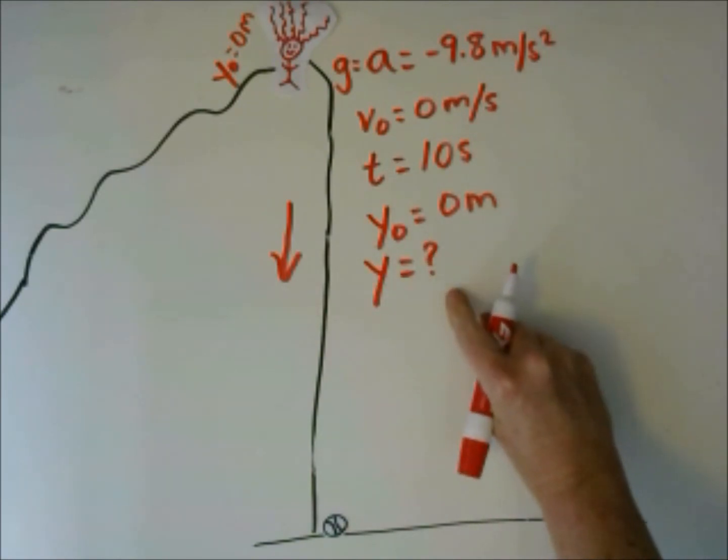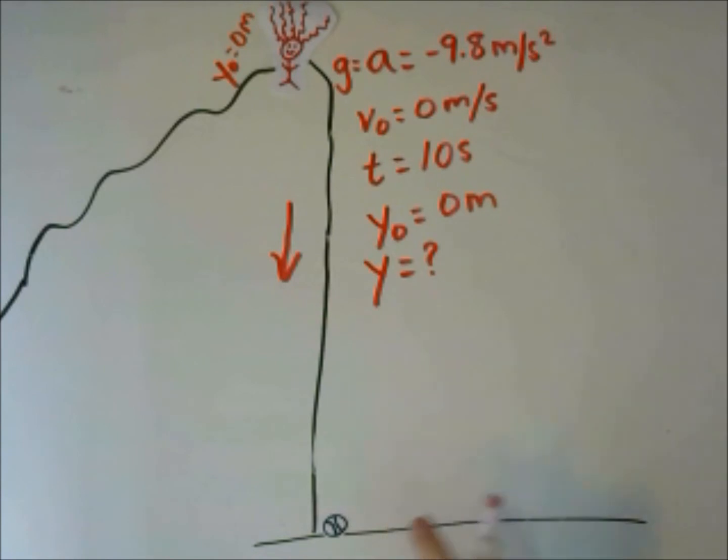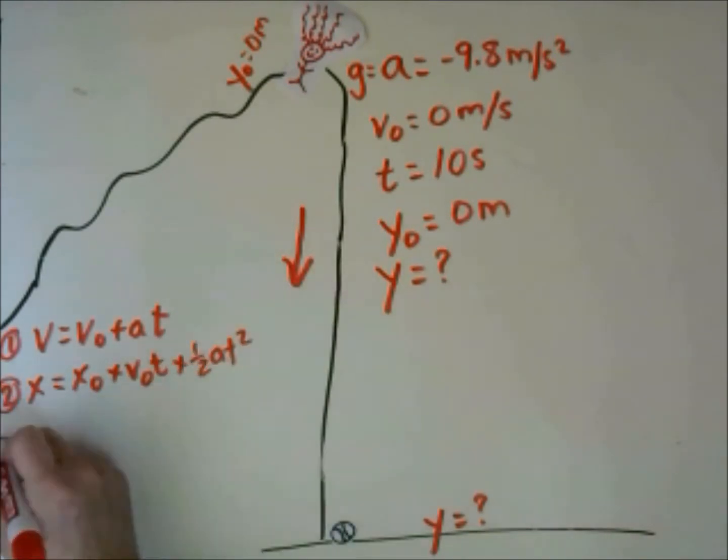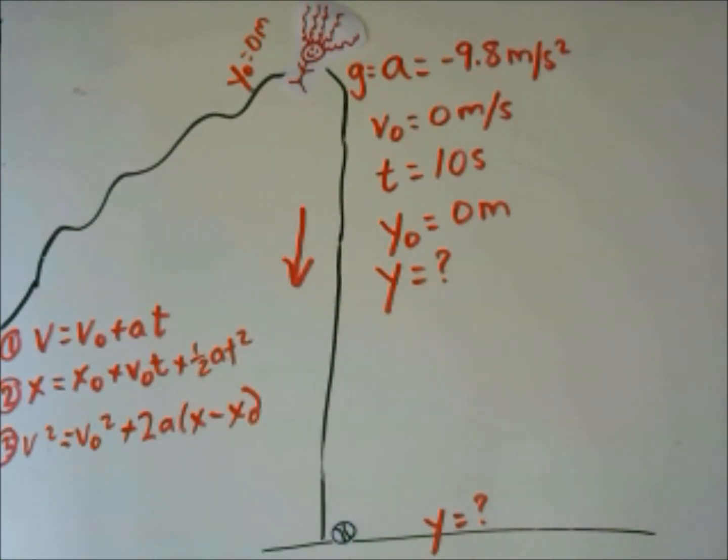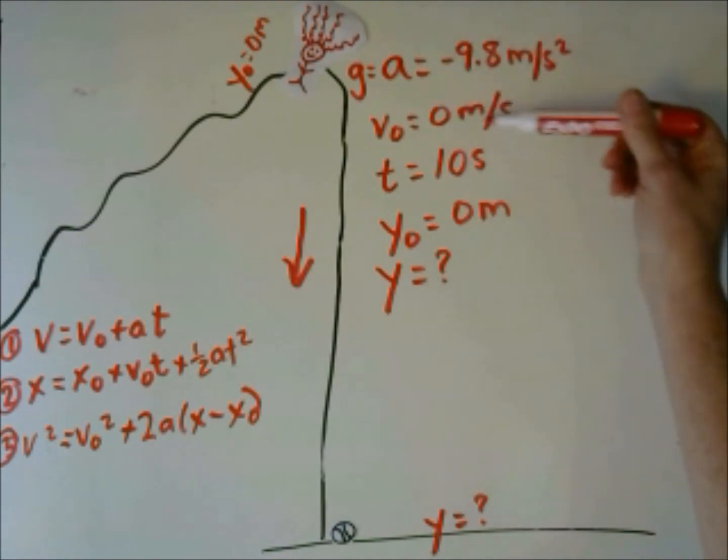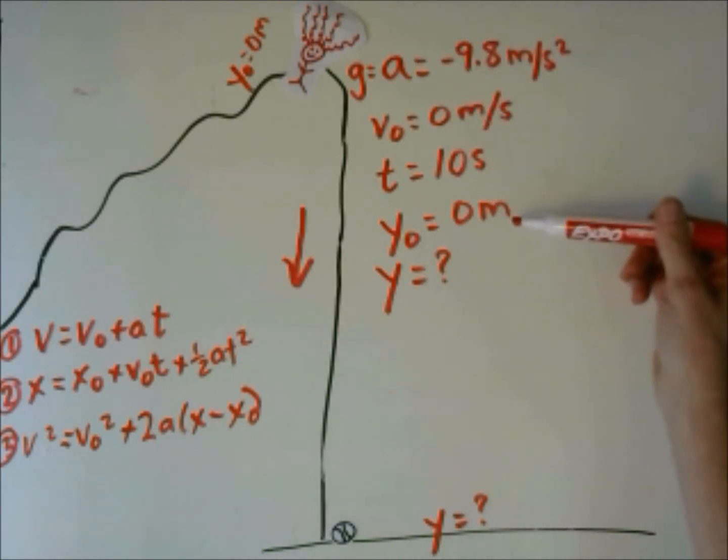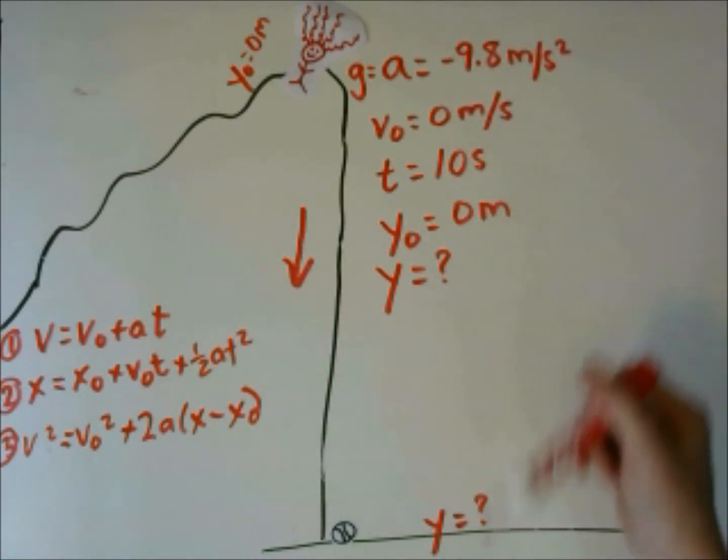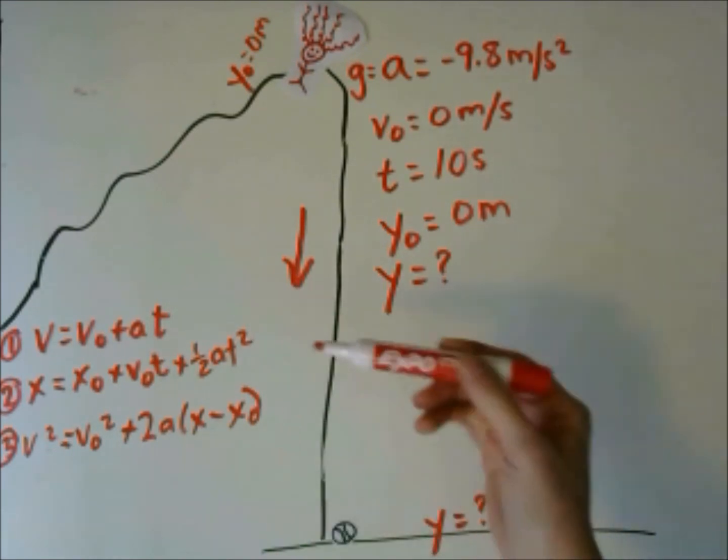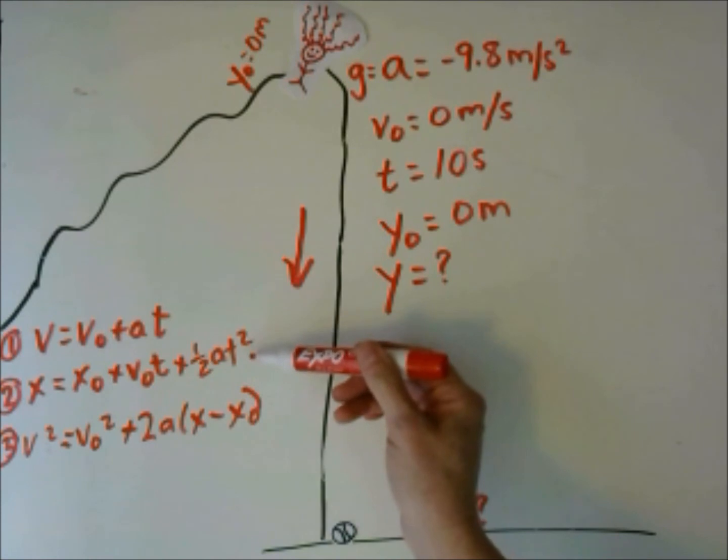And we want to find the y position down here. That will tell us how tall the cliff is. We will remember our kinematics equations. The best equation is going to have acceleration, initial velocity, time, initial position, and final position. And that is going to be equation number 2.